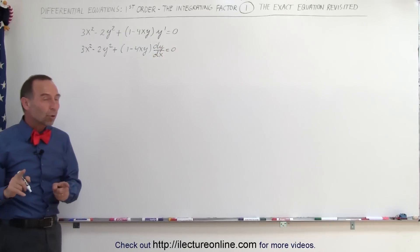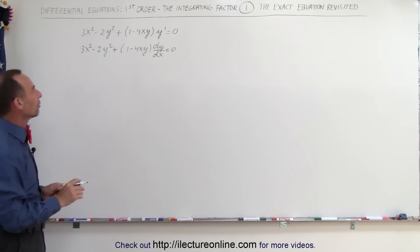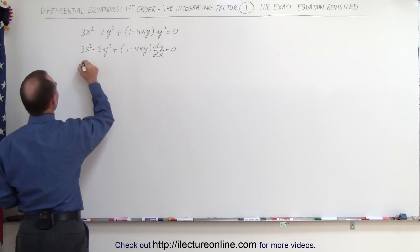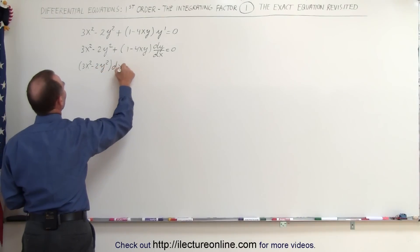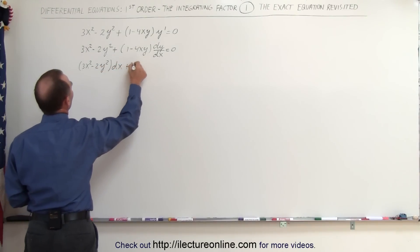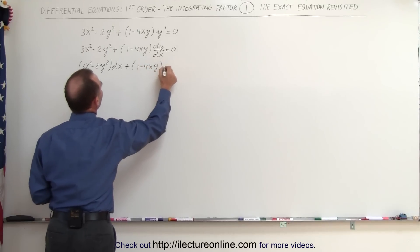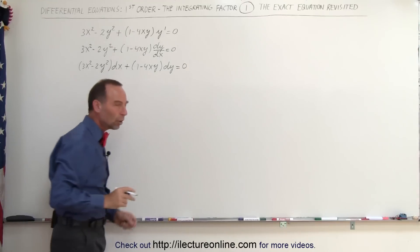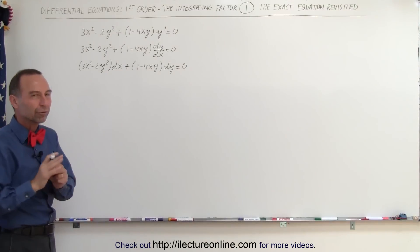Now, if we multiply both sides by dx, we get the exact form we're looking for. Multiplying both sides by dx gives us: (3x² − 2y²)dx + (1 − 4xy)dy = 0. So now we have this equation in the standard format.